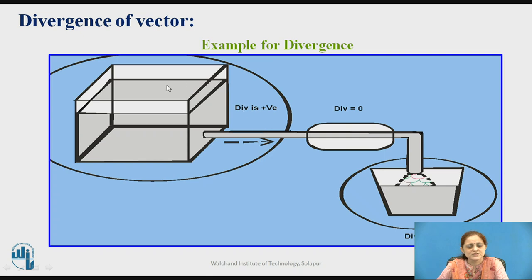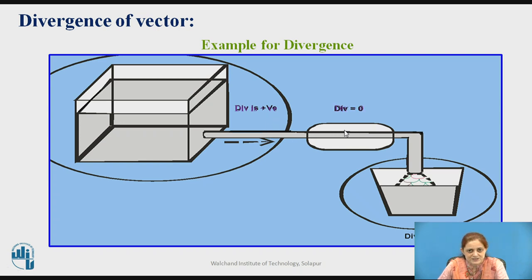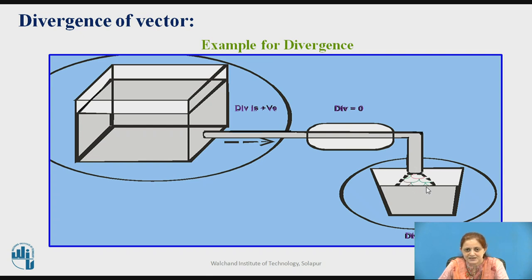This is an example of divergence using a water tank. When water is sourcing out, the divergence is positive — the field lines are going outward, similar to water pumping in the outward direction. At a point where the same quantity of water entering also leaves through a pipe, the divergence equals zero. When water is collected into a bucket — meaning it is incoming — the divergence is negative at that point.